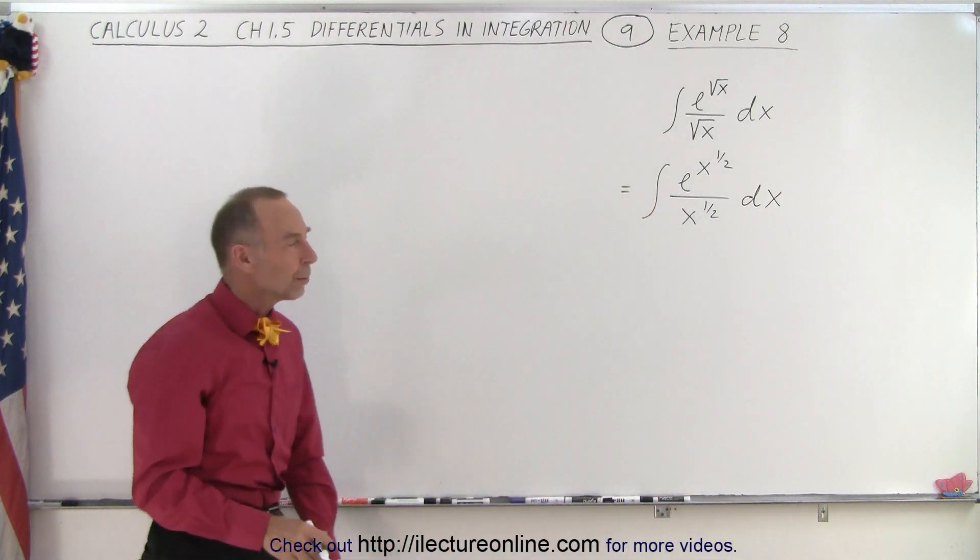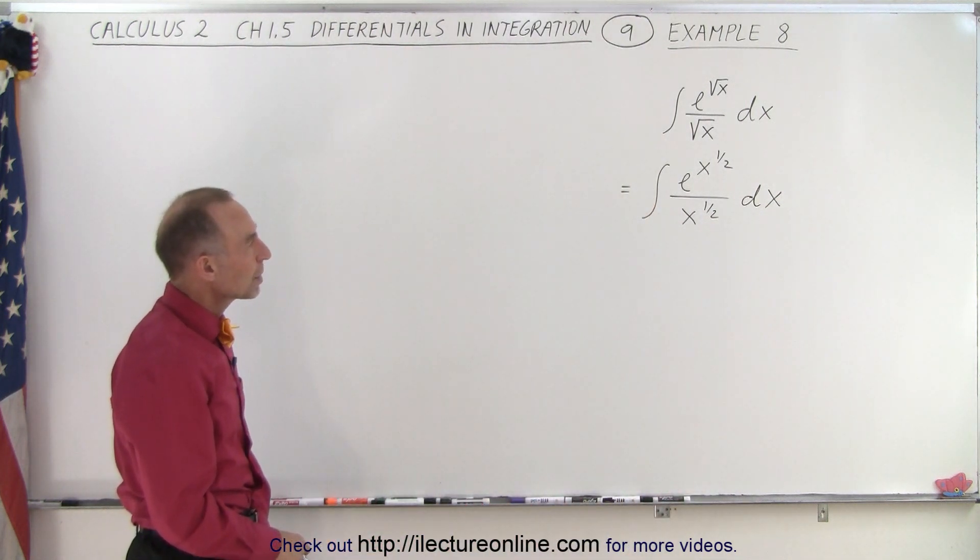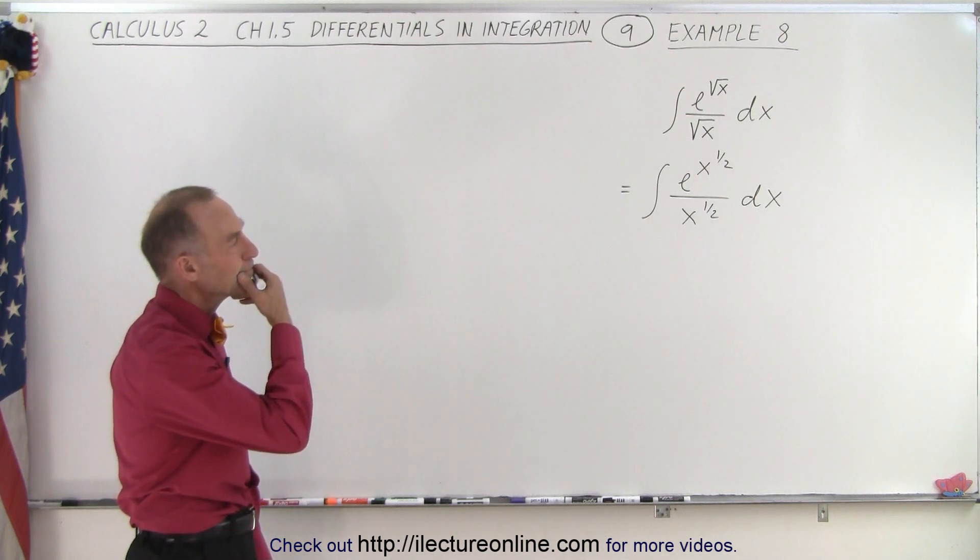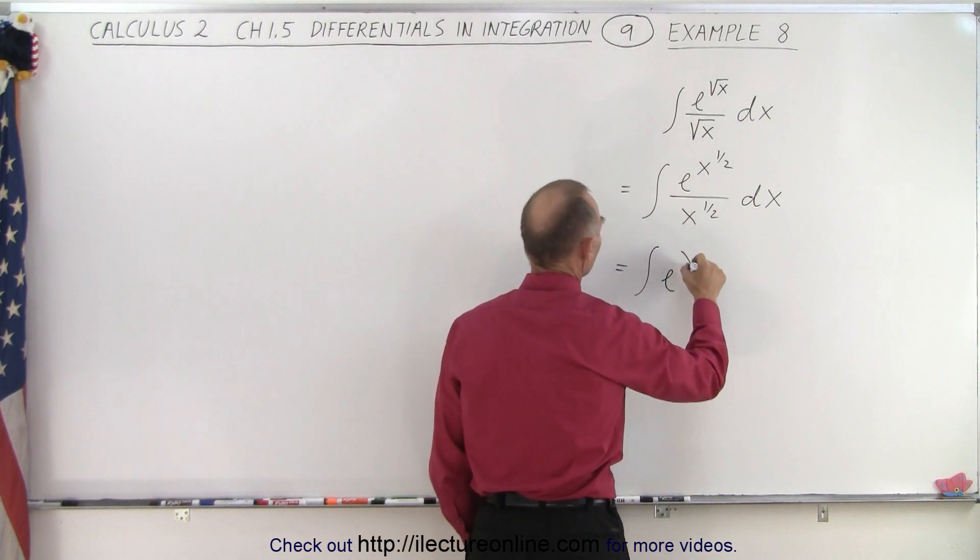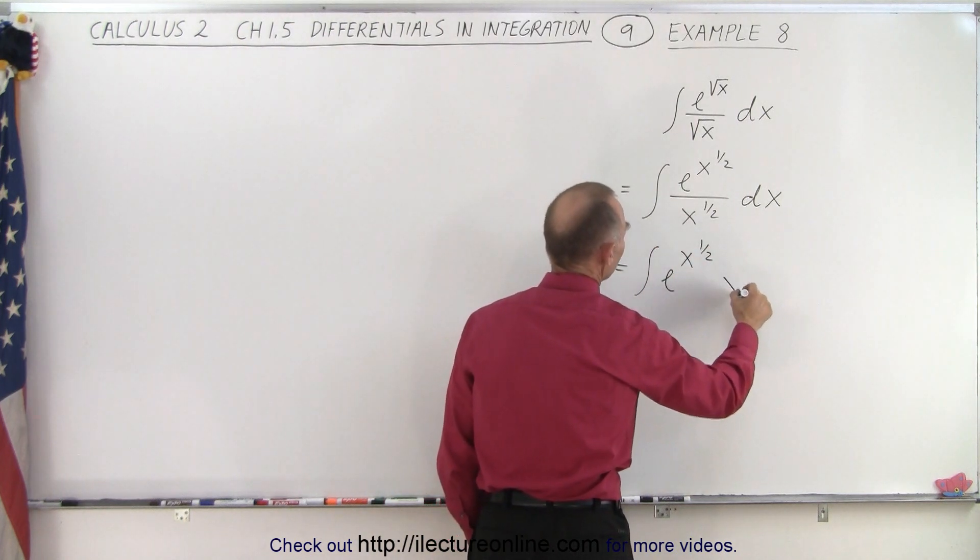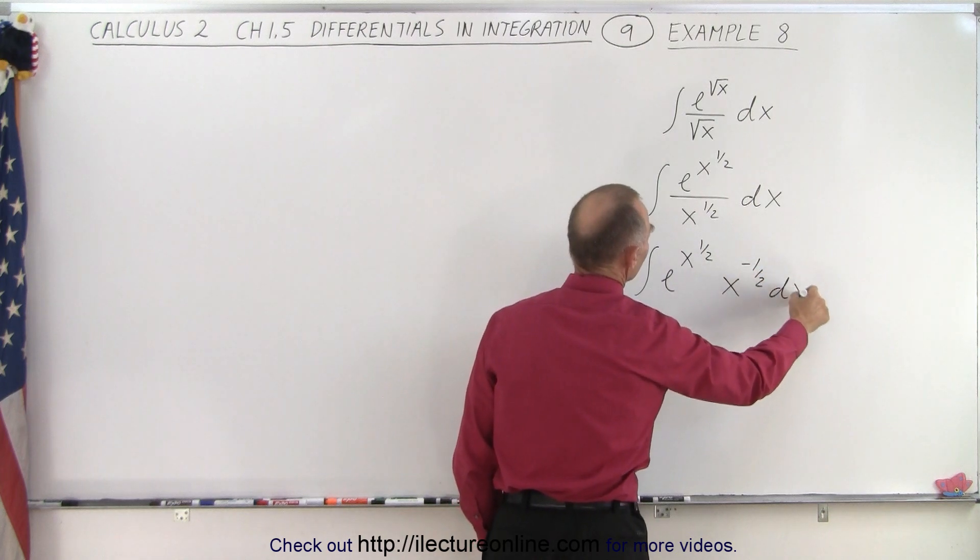So now what I think we should do is write it like this. This is equal to the integral of e to the x to the 1/2 power times x to the -1/2 power times dx.